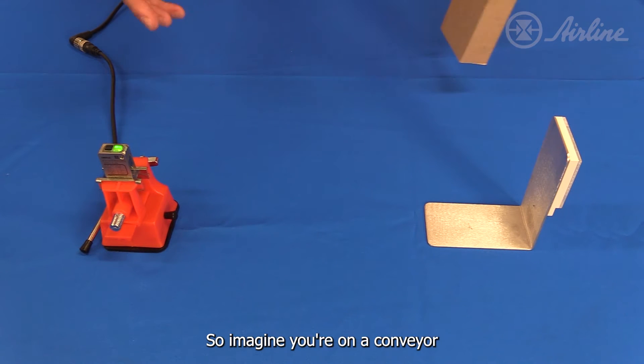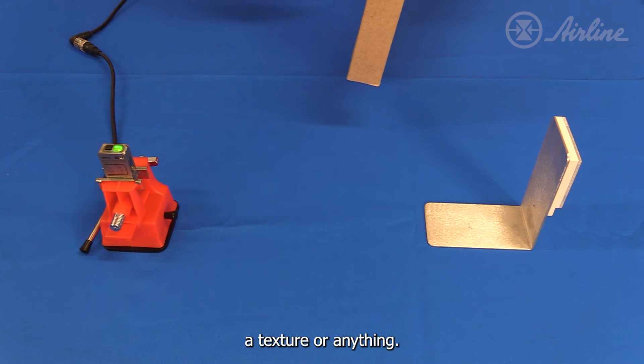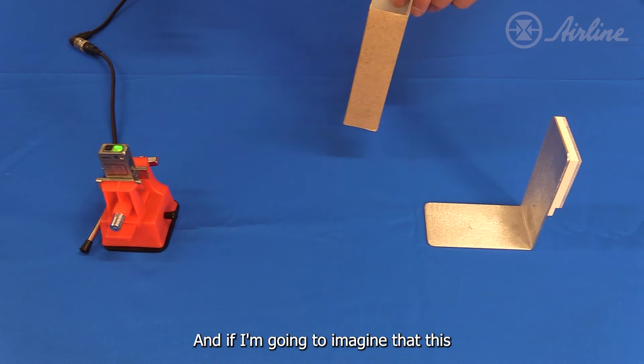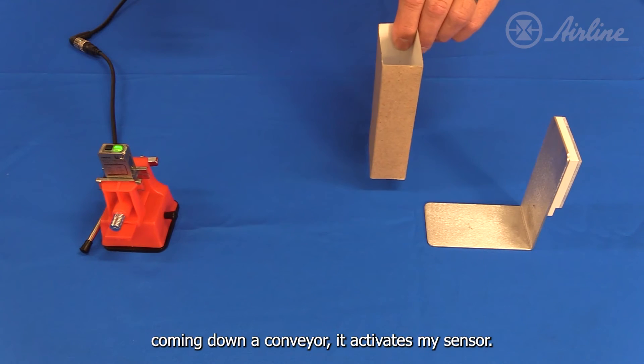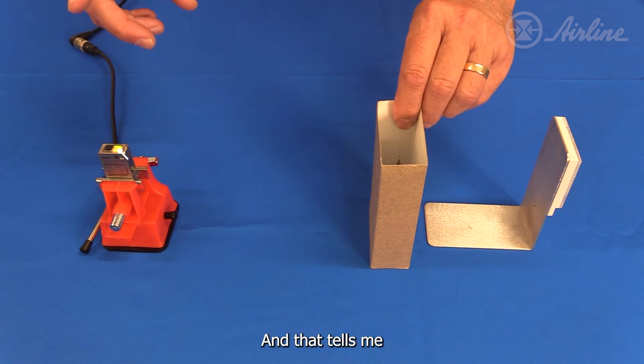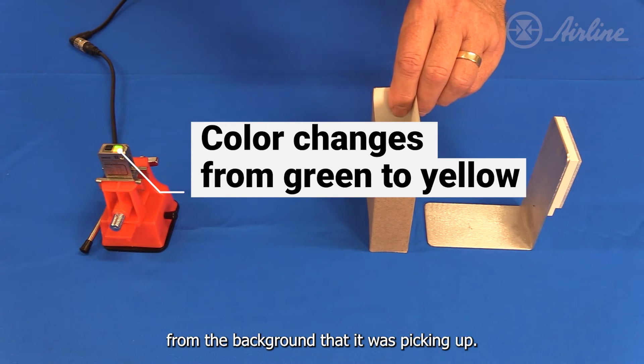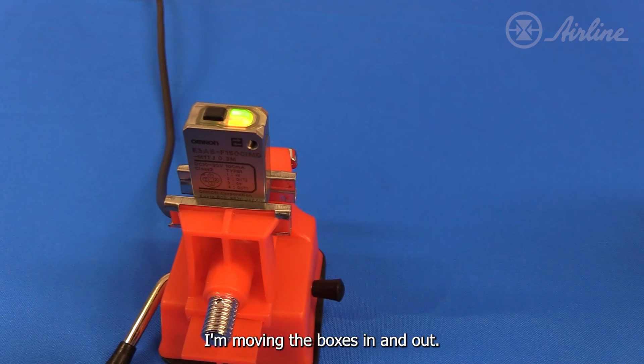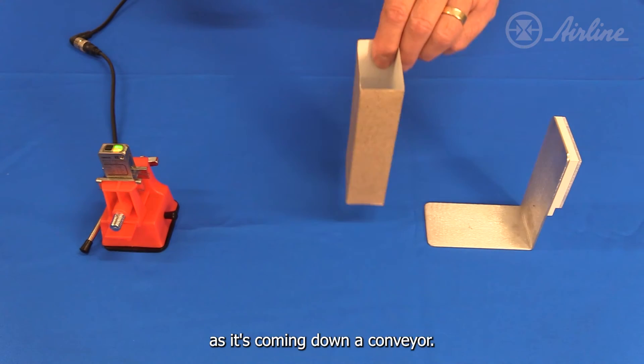So imagine you're on a conveyor and you have boxes of some sort, and it does not matter color, sheen, texture or anything. If I'm going to imagine that this piece of material is a box coming down a conveyor, it activates my sensor and that tells me that there is something that is blocking the object from the background that it was picking up. I'm moving the boxes in and out - it's able to pick up this box as it's coming down a conveyor.